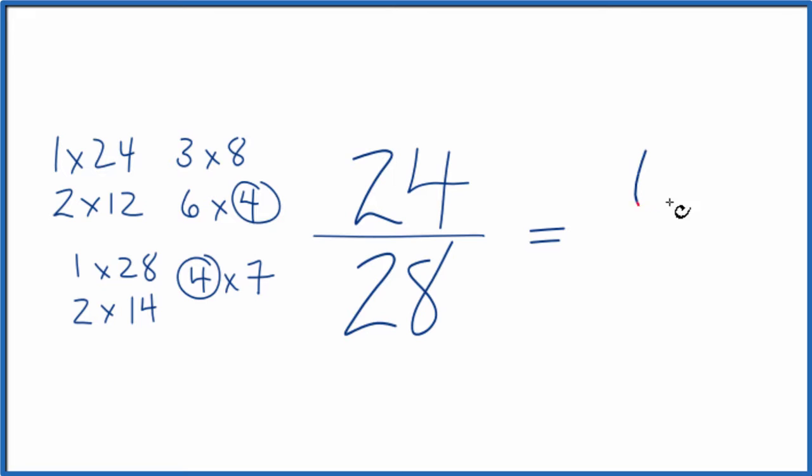So 24 divided by 4, that'll give us 6, and 28 divided by 4, that gives us 7. So we've simplified the fraction 24/28 down to 6/7, and we can't reduce or simplify this any further.